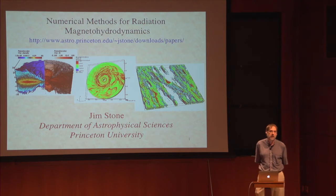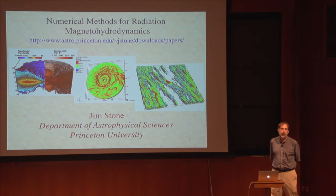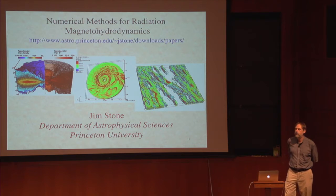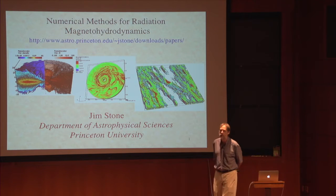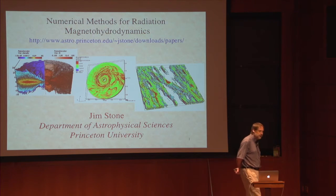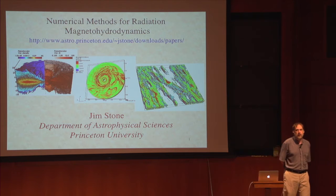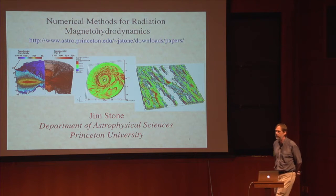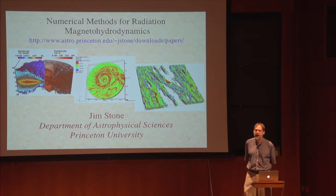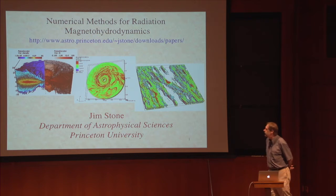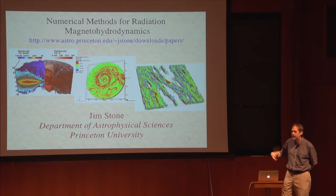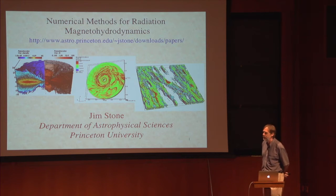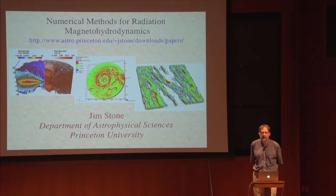There's controversy about even the most basic things, like what the right formulation of the equations you should be solving. Moreover, there are no public codes really, and the codes that do exist use very different methods. We're still trying to understand which methods are the most attractive. I believe there's an awful lot of interesting physics we're going to learn as we begin to add radiation into astrophysical fluid dynamics — it's a very hot topic for the next ten years or more.